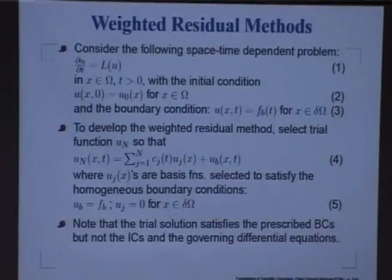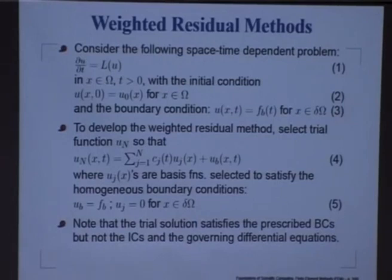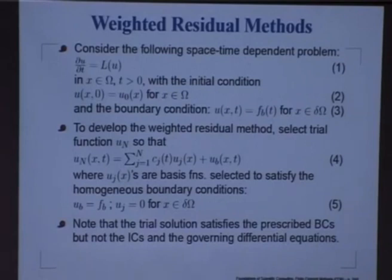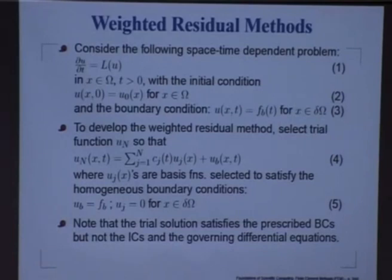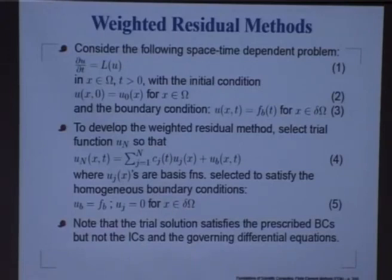Take a look at equation 1 — it is your generic problem where you do some kind of spatial discretization and end up with some kind of evolution equation. You define it in the domain x in omega, and you also define the initial conditions and boundary conditions as given in equations 2 and 3. To develop the weighted residual method, you have to select a trial function which we call u_n. u_n will have two parts: the first part relates to a space-time dependence of the problem, where u_j of x is the specific qualitative dependence we prescribe.